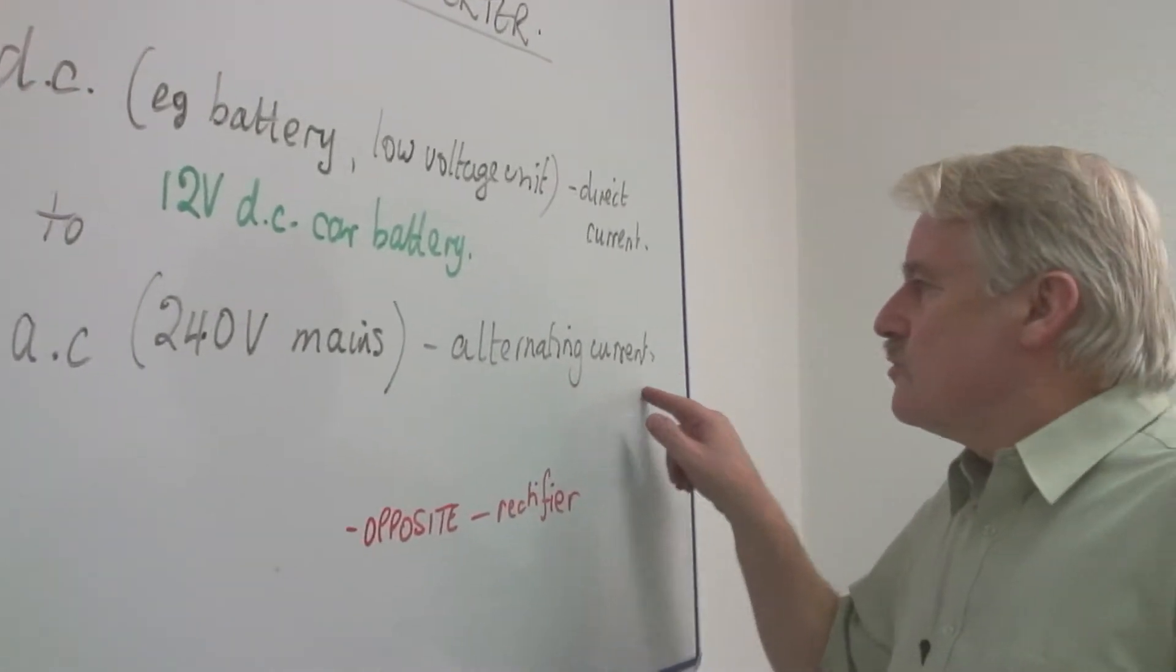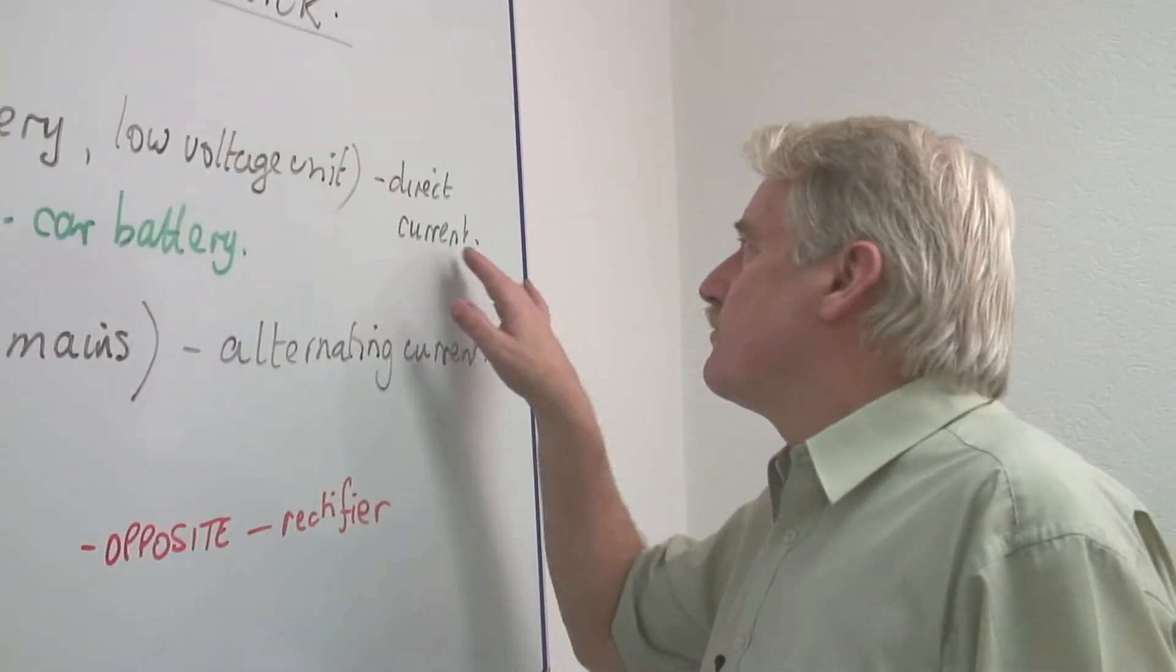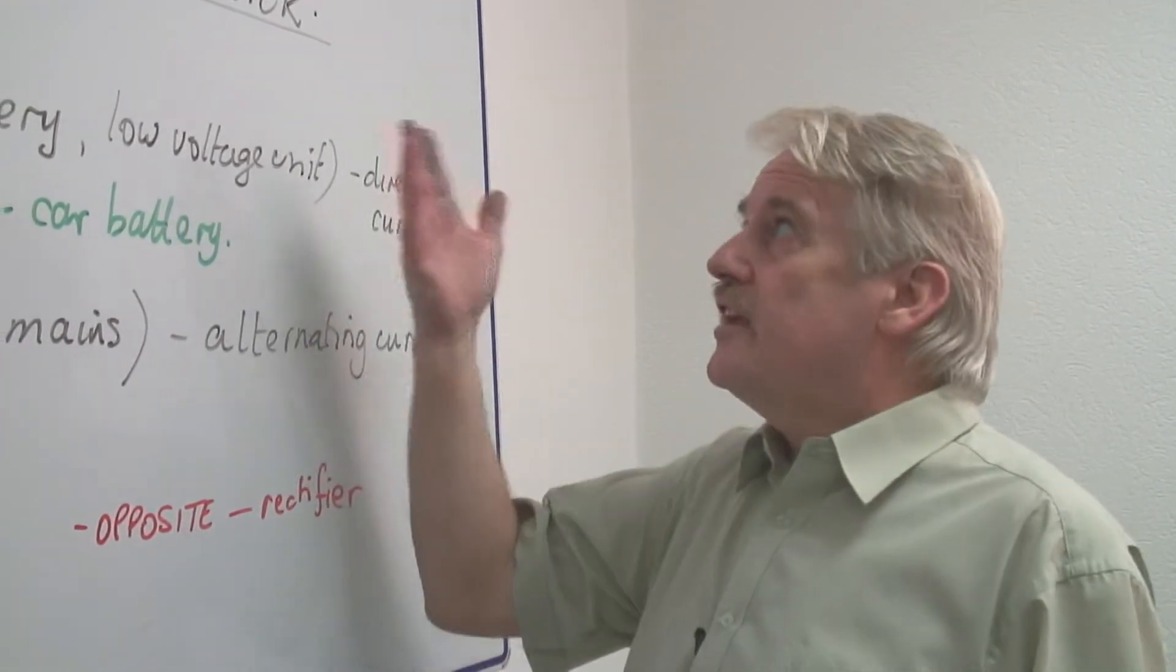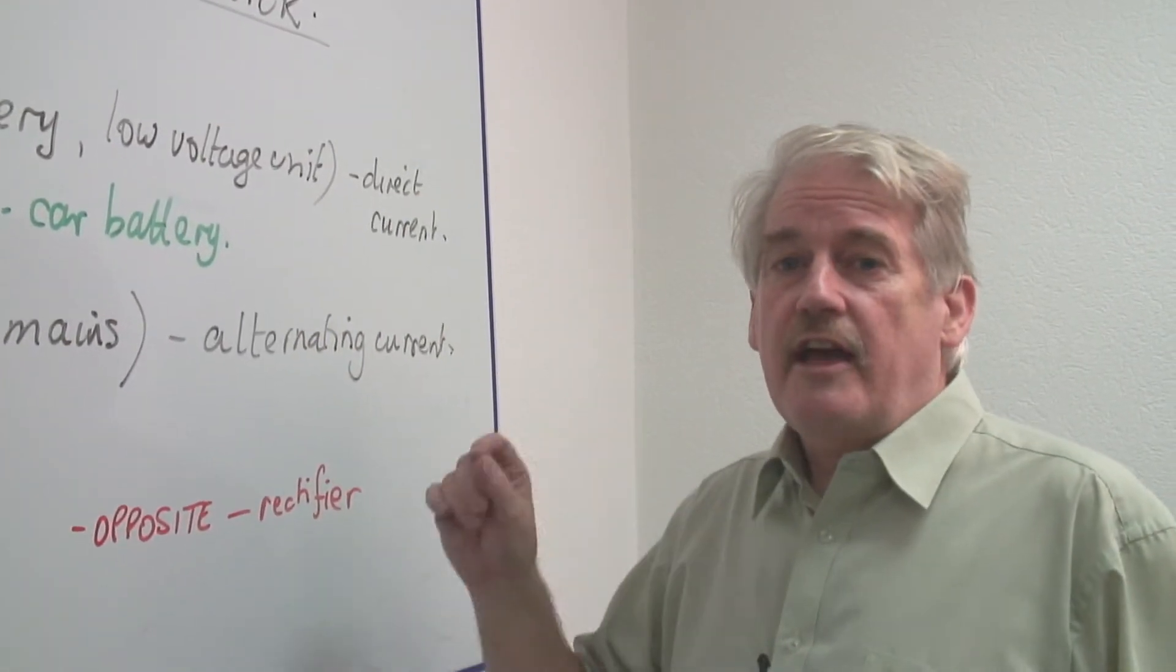In fact, to create alternating current from direct current is very difficult, but the electrical inverter does that job.